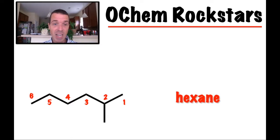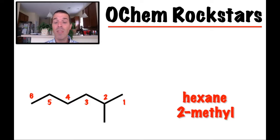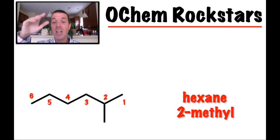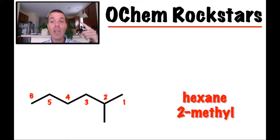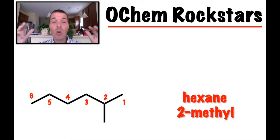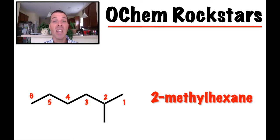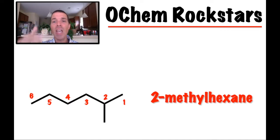We have a hexane base chain and we have to factor in the methyl group with its number. Between numbers and letters you always use a dash, so it's 2-methyl. Then the base name goes at the end — you write hexane last, and put the substituent in front of it. So the name is 2-methylhexane. That '-ane' tells you the longest chain and the functional group — all single bonds.